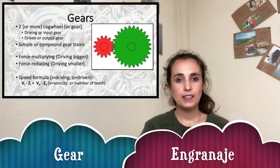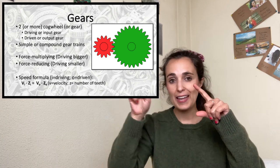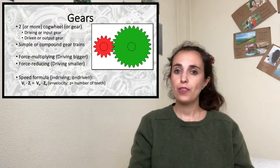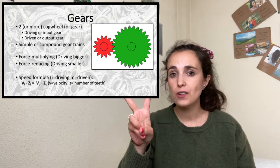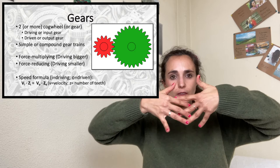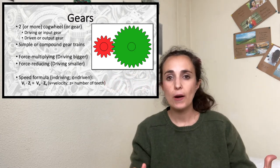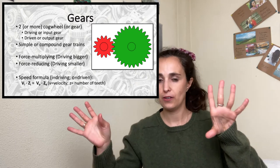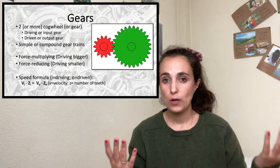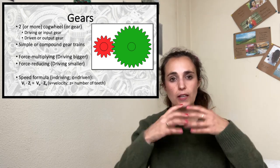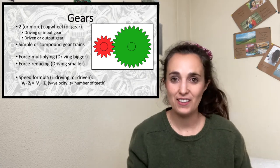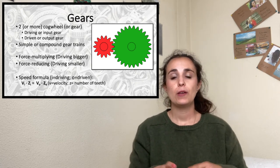Gears are pieces like wheels but they have teeth on their border. When we talk about a mechanism with gears, we are talking about at least two gears — also called cog wheels — joined by their teeth, so when one moves it pushes the other. As with pulleys, we have a driving gear and a driven gear. When we have two or more gears we call them trains: simple trains for just two gears, or complex trains if we have three, four, five, or more gears.